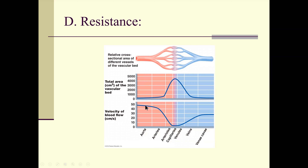Looking at resistance: it is very low in the large arterial vessels, higher at the capillary beds, and low again in the venous system. Velocity of blood flow is high in the arterial system, low in the capillaries — but that's where we want it low because that's where exchange occurs — then higher again as we go back into the venous system.